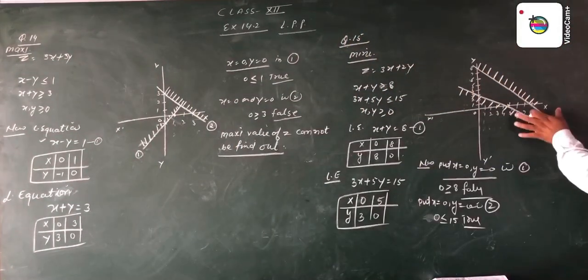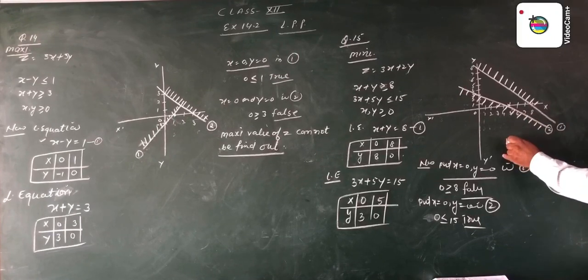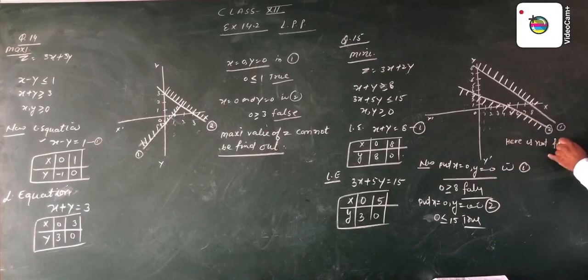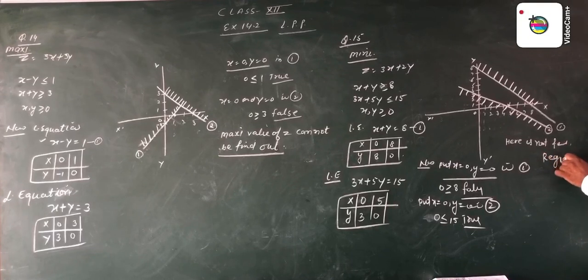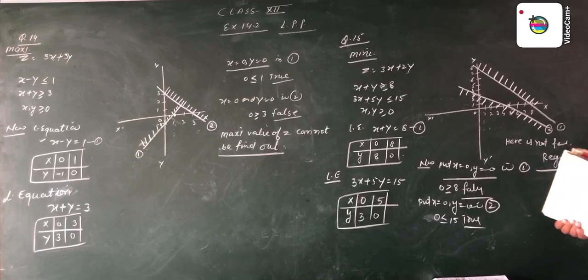There is no common area of these feasible regions, and also no common area here. So we conclude there is no common area. This is exercise 14 — it means there is no common area for this system of equations.